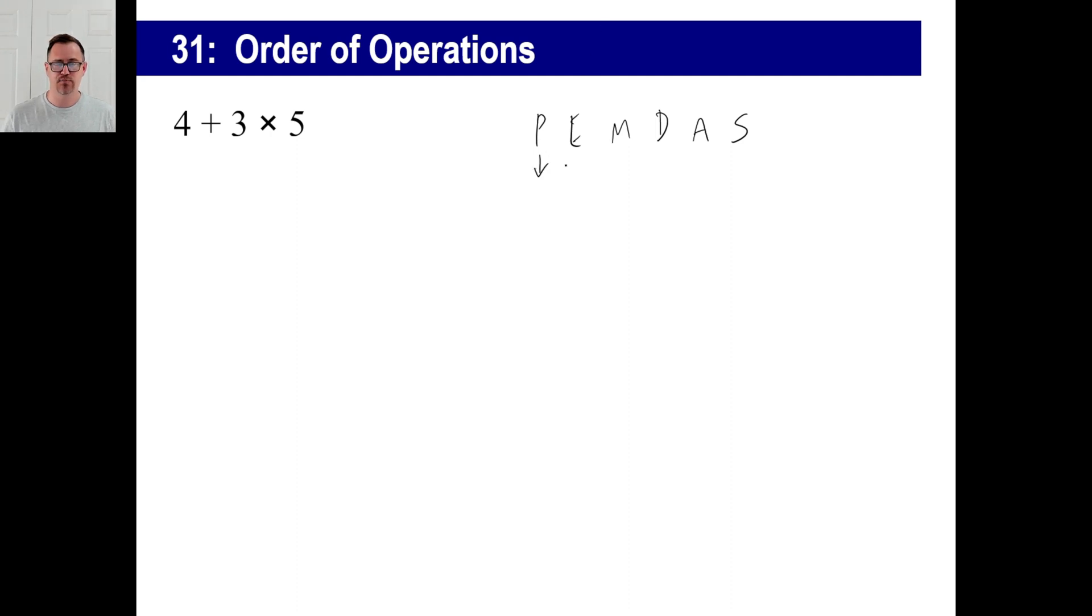This P stands for parentheses. Those are first. Then exponents. Then you just multiply and divide. You can do that, just left to right. Just do that next. And then this is kind of one as well. Add and subtract. That's left to right as well.